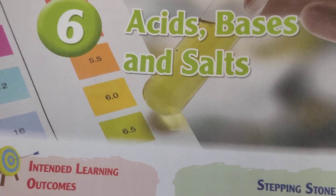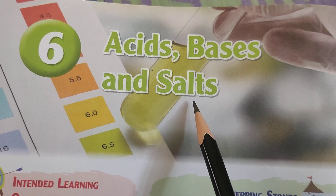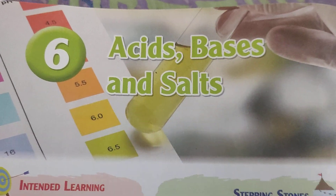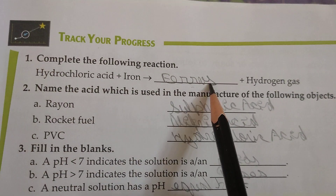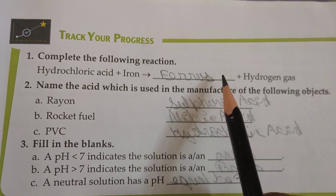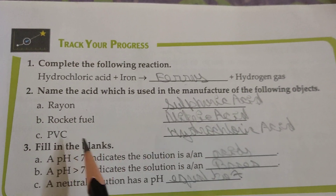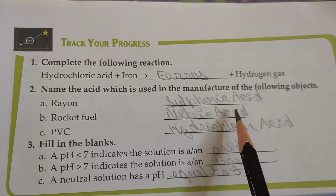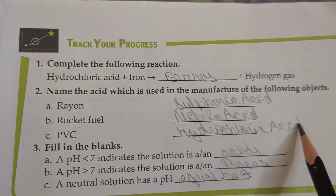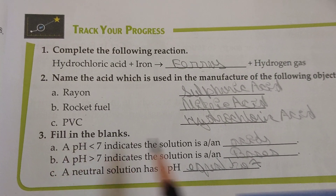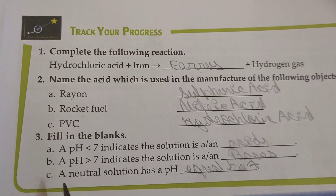Hello students, today we are going to write all the fill-ups of this chapter — Acids, Bases and Salts, Chapter Number 6. Fill-up number one will be ferrous. Number two: rayon will be sulfuric acid, rocket fuel will be nitric acid, PVC is hydrochloric acid. Fill-up number A will be acid, number B will be bases, number C will be equal to seven.